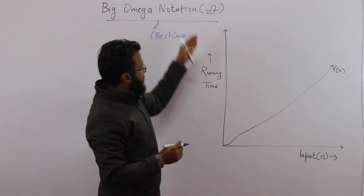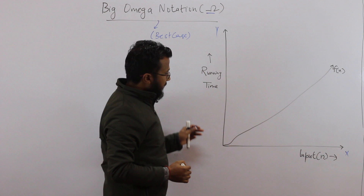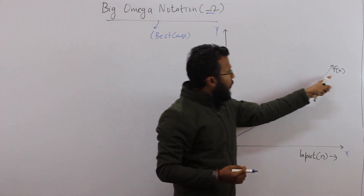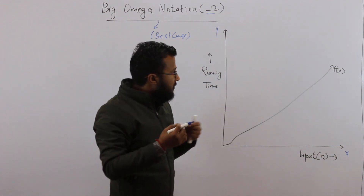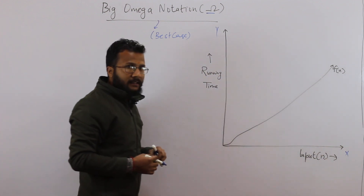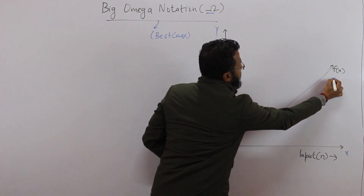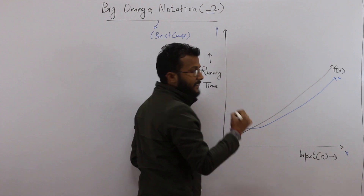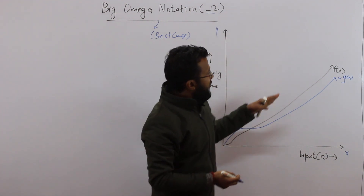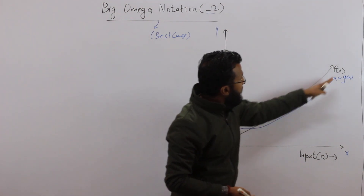In Big Omega, the idea is very simple. Consider this graph — the x-axis denotes the input, the y-axis denotes the running time, and f(n) is the running time of the algorithm. Now if we can lower bound this function f(n) by some other function of n, then we can say that f(n) is Omega of g(n). Let's say there is another function — a constant multiple c times g(n), where g(n) is also a function of n. That means we are lower bounding f(n) by c times g(n).